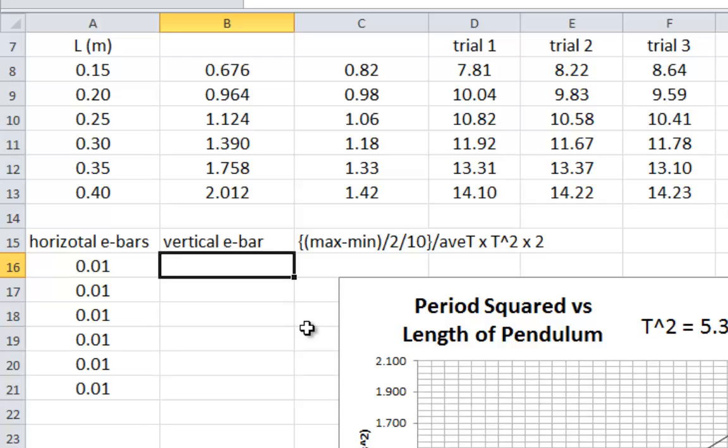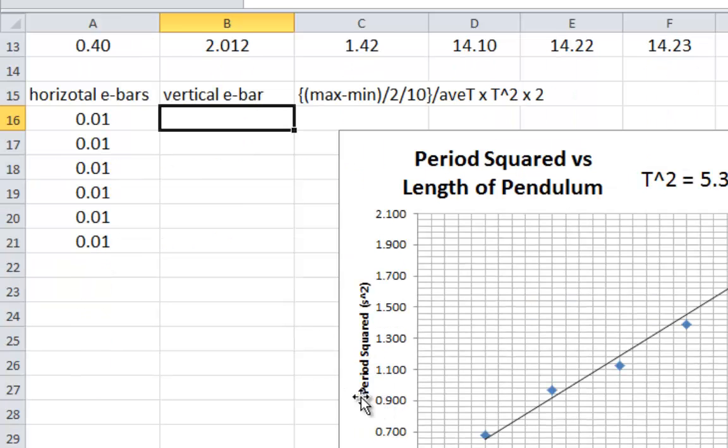If you do it all in one step. Some kids do it in a few steps. They find the uncertainty of the average. Maybe. Then they find the uncertainty on each average T. And then. Maybe. They find the uncertainty on the T squared.